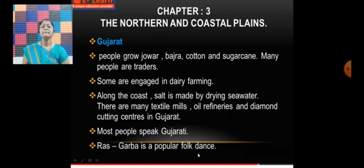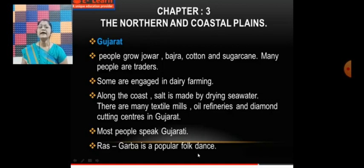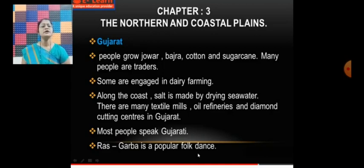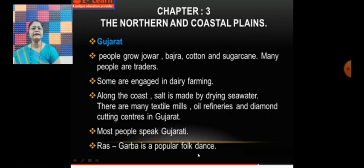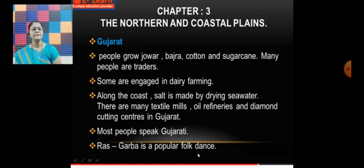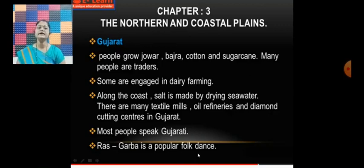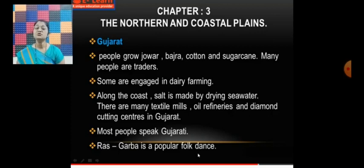Now let us talk about Gujarat. People grow jowar, bajra, cotton, and sugarcane. Many people are traders. Some are engaged in dairy farming. Along the coast, salt is made by drying seawater. There are many textile mills, oil refineries, and a diamond cutting center in Gujarat. Remember that the diamond cutting center is in Gujarat only.